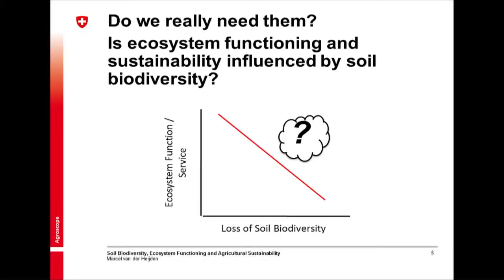A big question for us is: do we really need them all? Is it important to have soil biodiversity? I'm a Dutch person and in the Netherlands people produce a lot of tomatoes without soil at all — so maybe we don't need soil biodiversity. But maybe we need it for soil ecosystem functioning. The question is, when there is a loss of soil biodiversity, whether the ecosystem functions or services also decline. That's our working hypothesis.